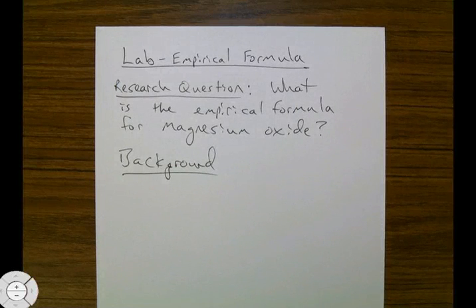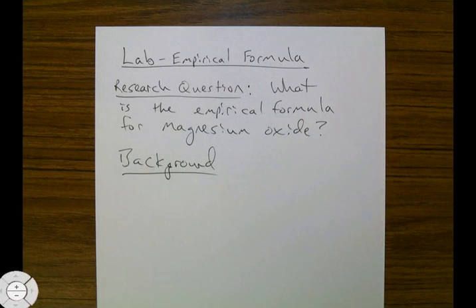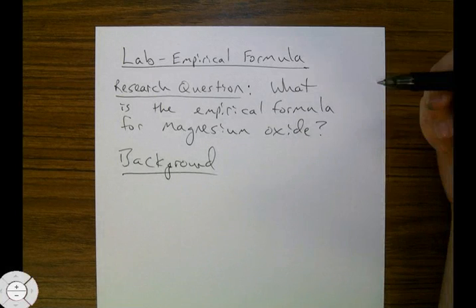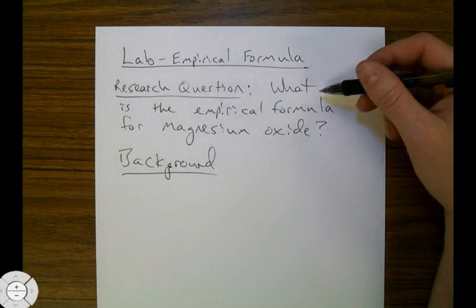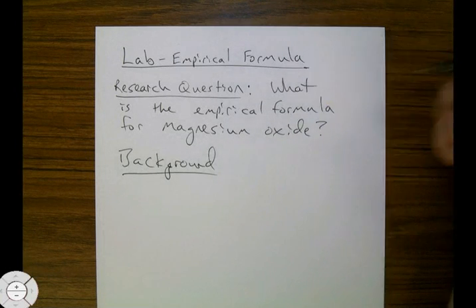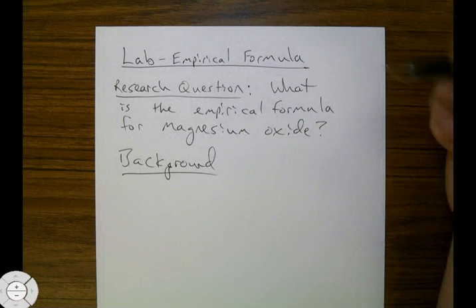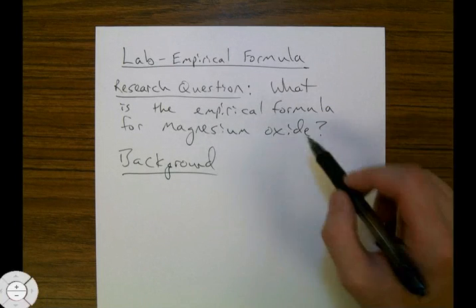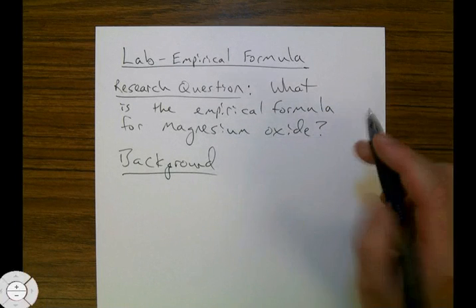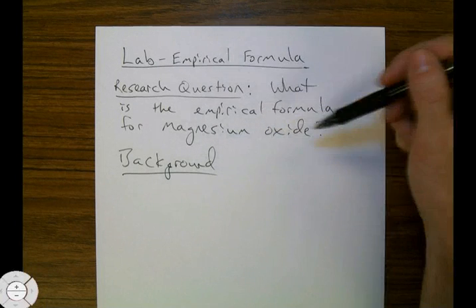This is Mr. Barron. I'm going to show you how to figure out the empirical formula for magnesium oxide in this pre-lab. So first off, in your lab notebook, you want to write the title, Lab Empirical Formula. You want to write the research question, which is where I'm going to try and figure out the empirical formula, specifically for a compound between two elements, magnesium and oxygen.